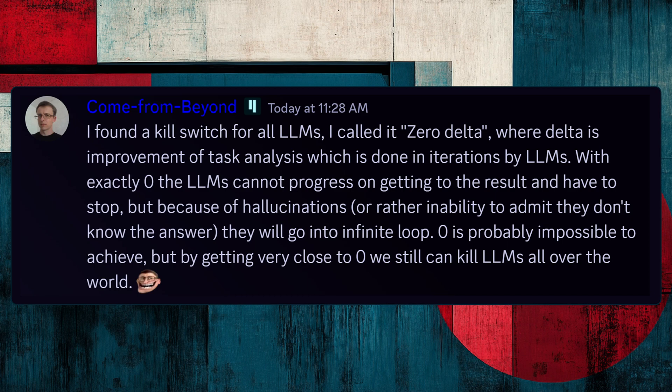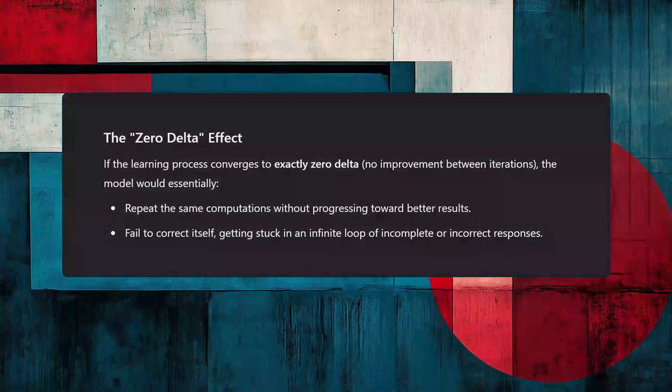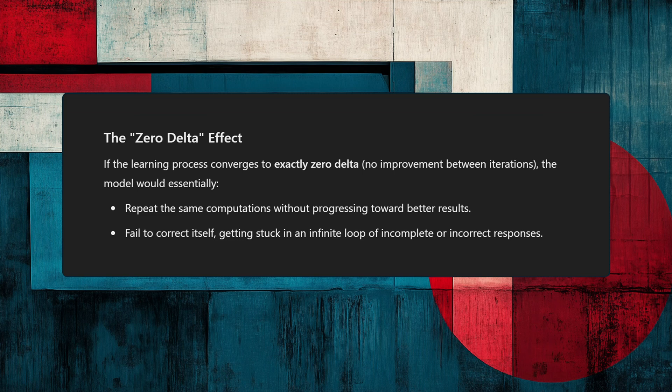So what does that mean exactly? Large language models develop in iterations, where each iteration is an improvement of its previous state. The problems appear if the improvement is negligible or zero. In such a situation, the whole system breaks. It doesn't just stop working, but because it cannot admit to being wrong, it'll go into a loop and break.